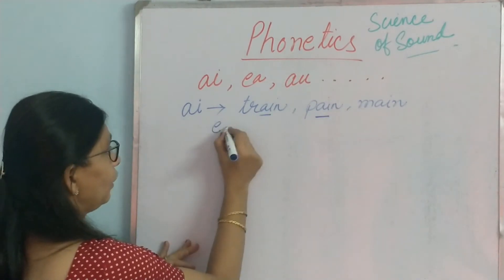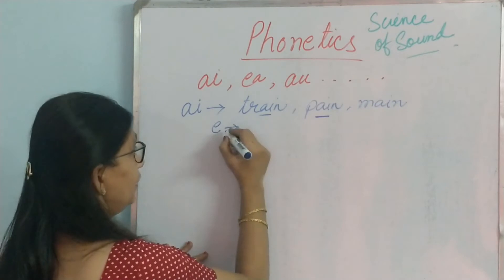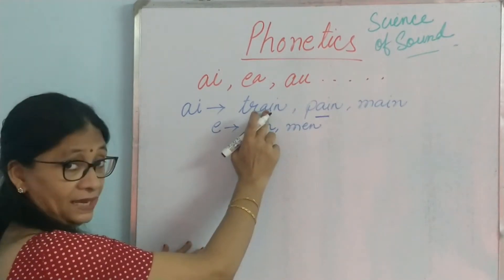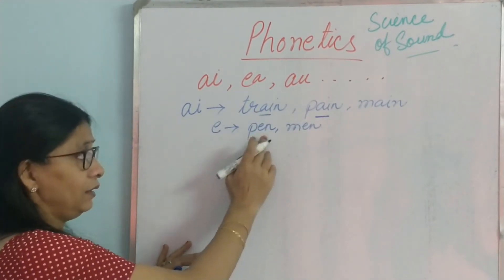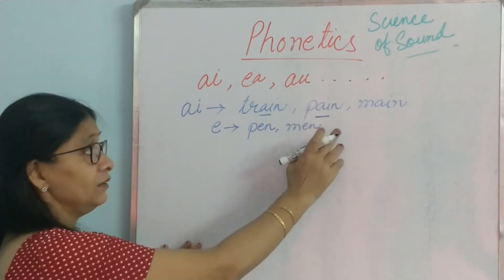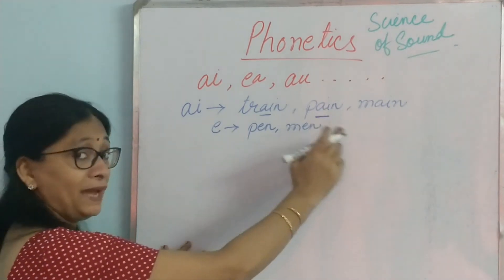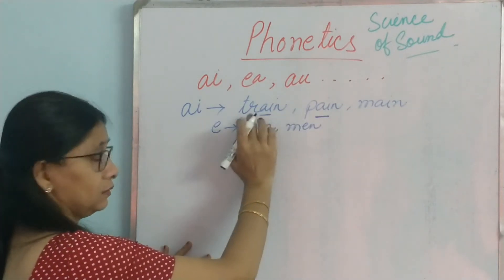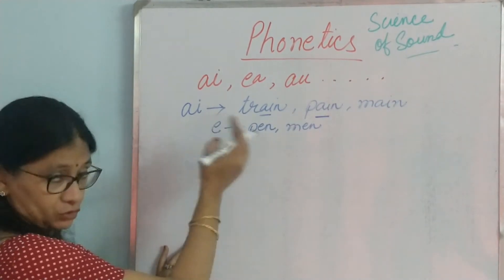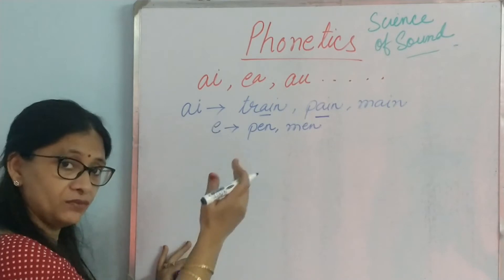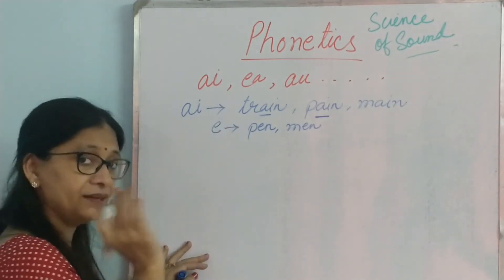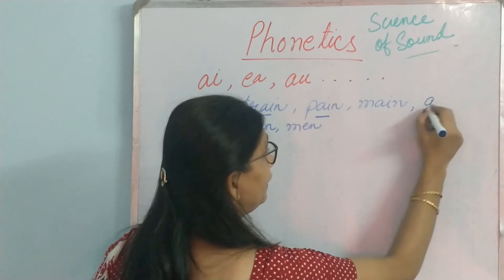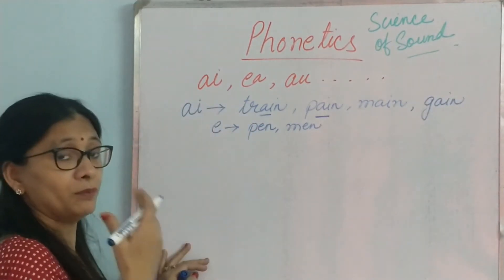In the last video we saw that A sound comes from E also. E gives an A sound like ten, pen, men. So this is also an A sound. But see the difference: this is 'pain' — long A sound — but this is 'pen' — short A sound. So try to understand the difference between single vowel E, which gives a short A sound, and combined vowel AI, which gives a long A sound. Train, pain, main, gain — try to remember all words that have AI in them.